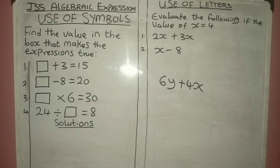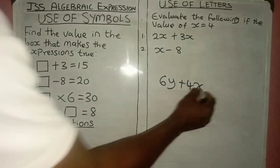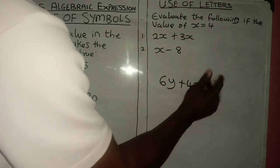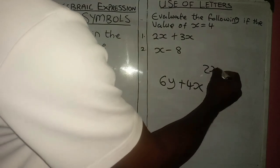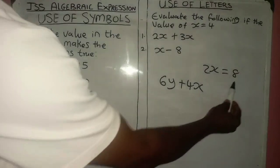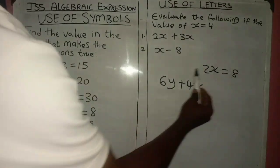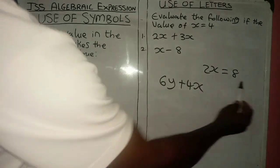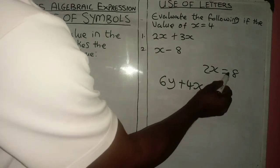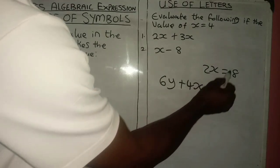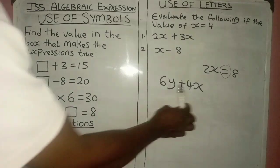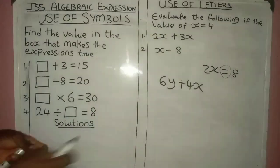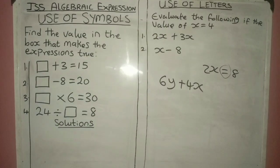We shall also be discussing the equation, whereby we will have something like 2x is equal to 8. This is an algebraic equation — it becomes an equation when an equal sign is introduced. But when there is no equal sign, it remains an expression.